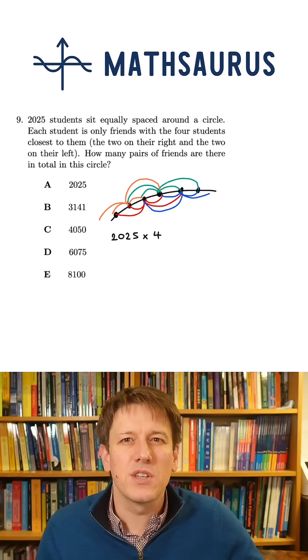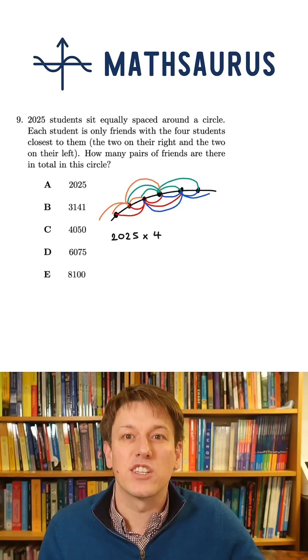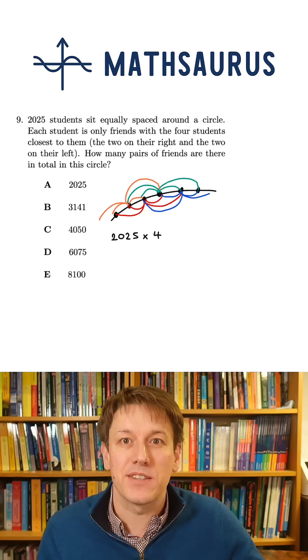But when I look at the friendships, all of them have been counted twice. Because if person A is friends with person B, then I will have counted that friendship when I looked at person A and also when I looked at person B.